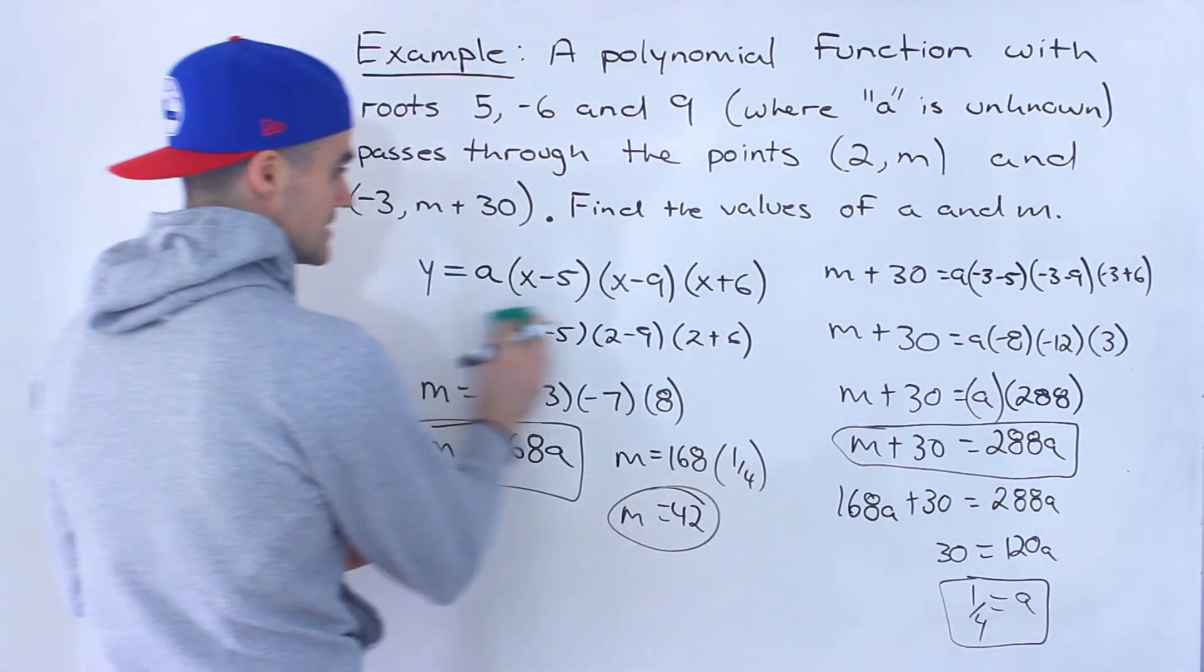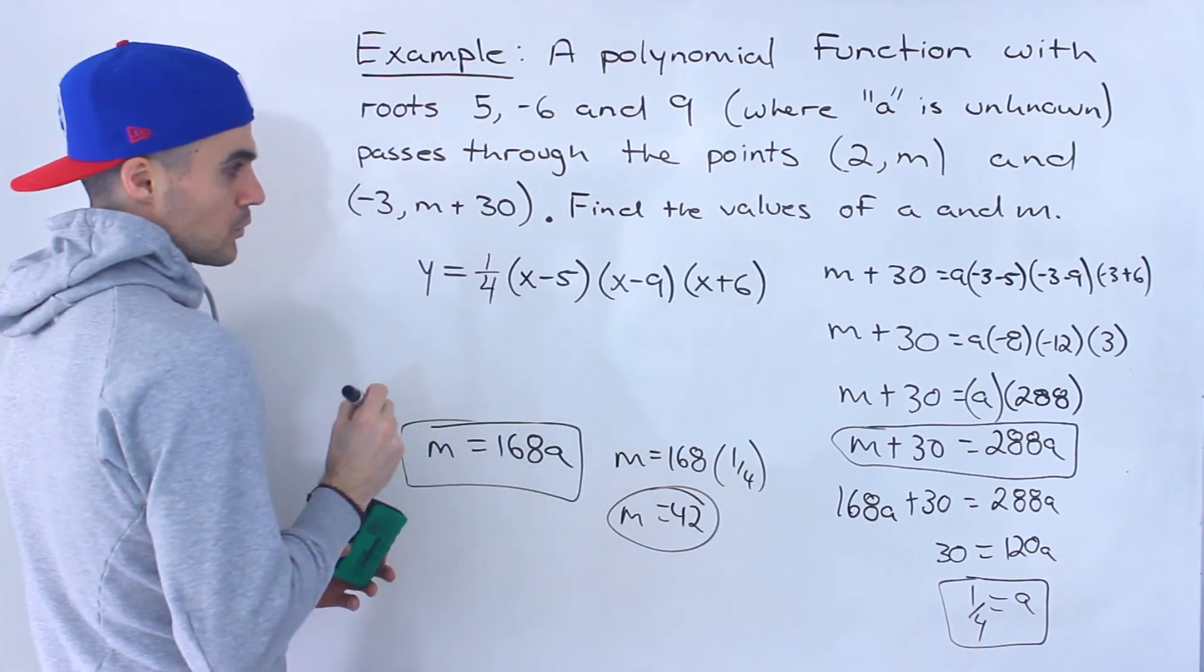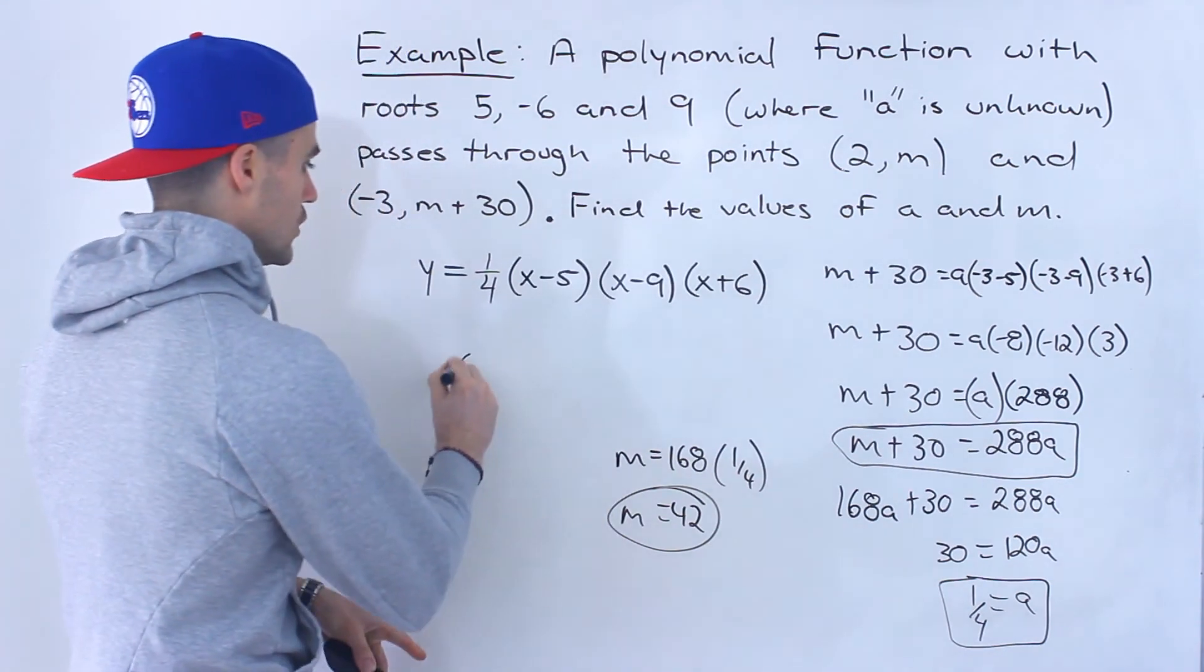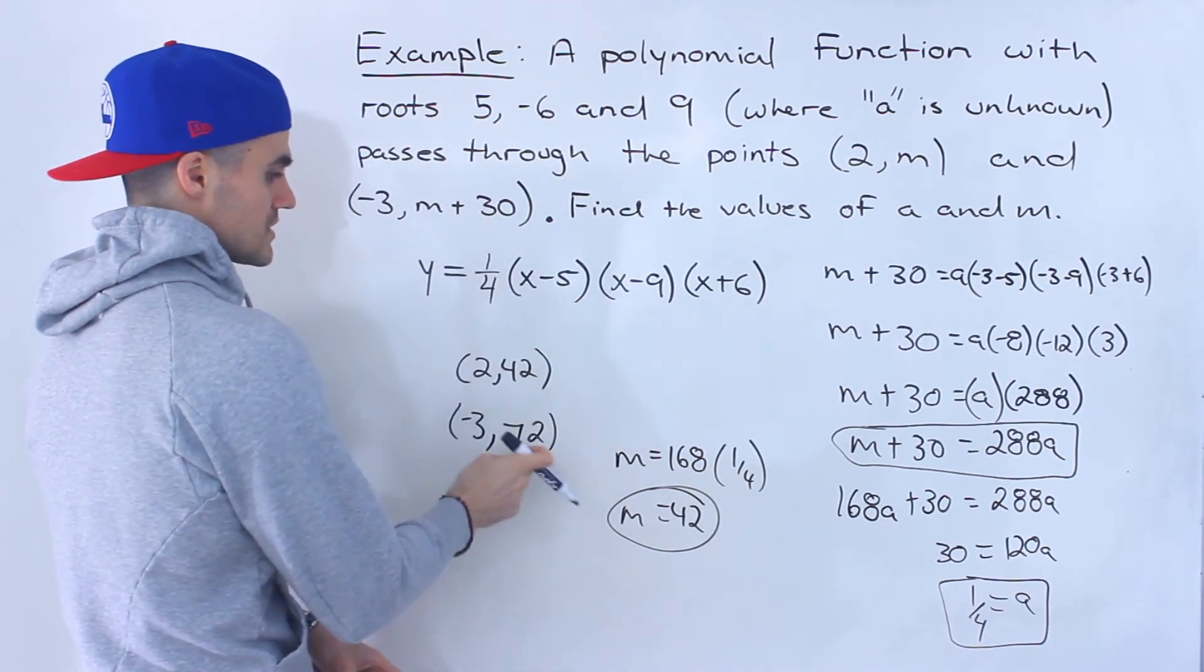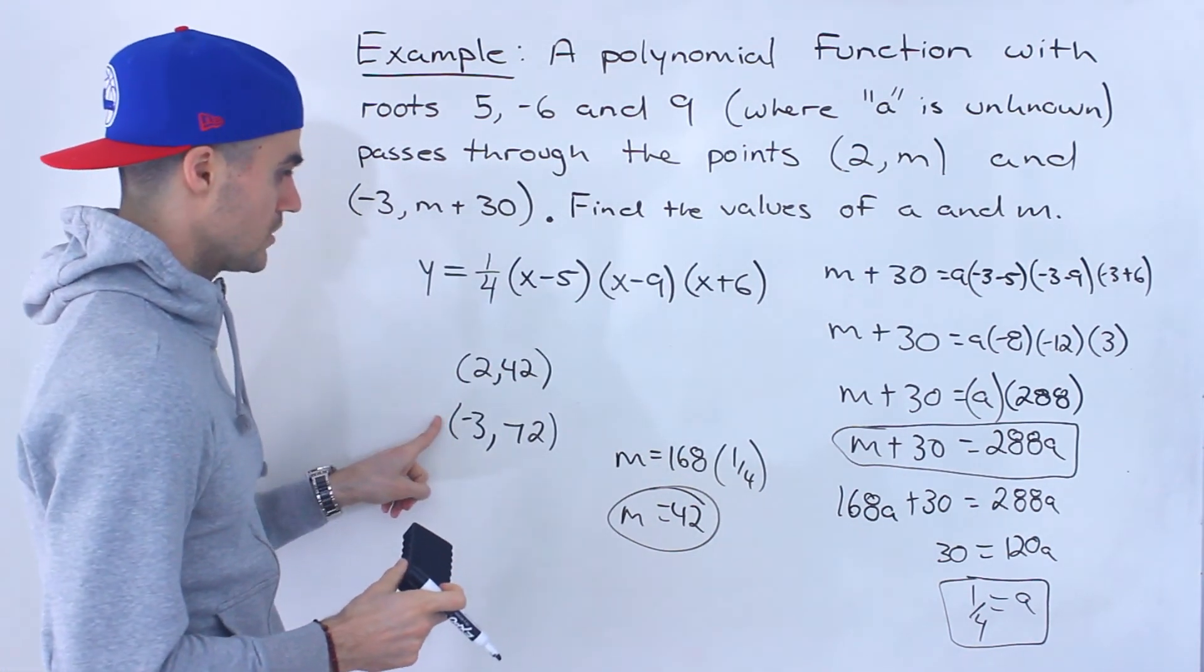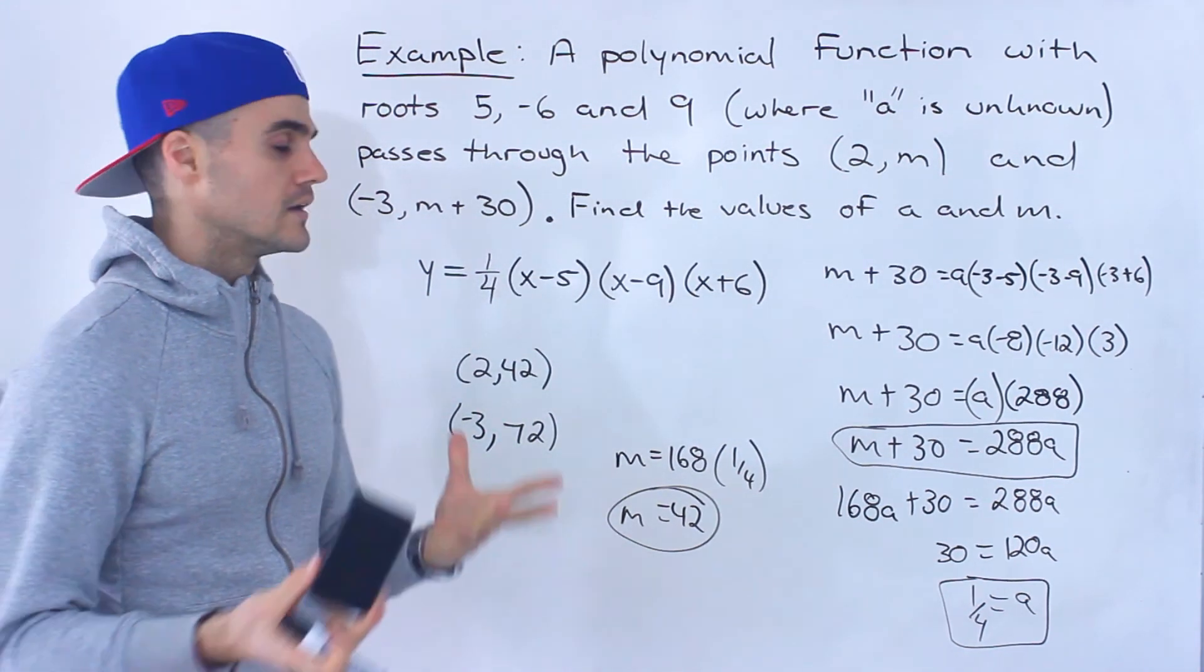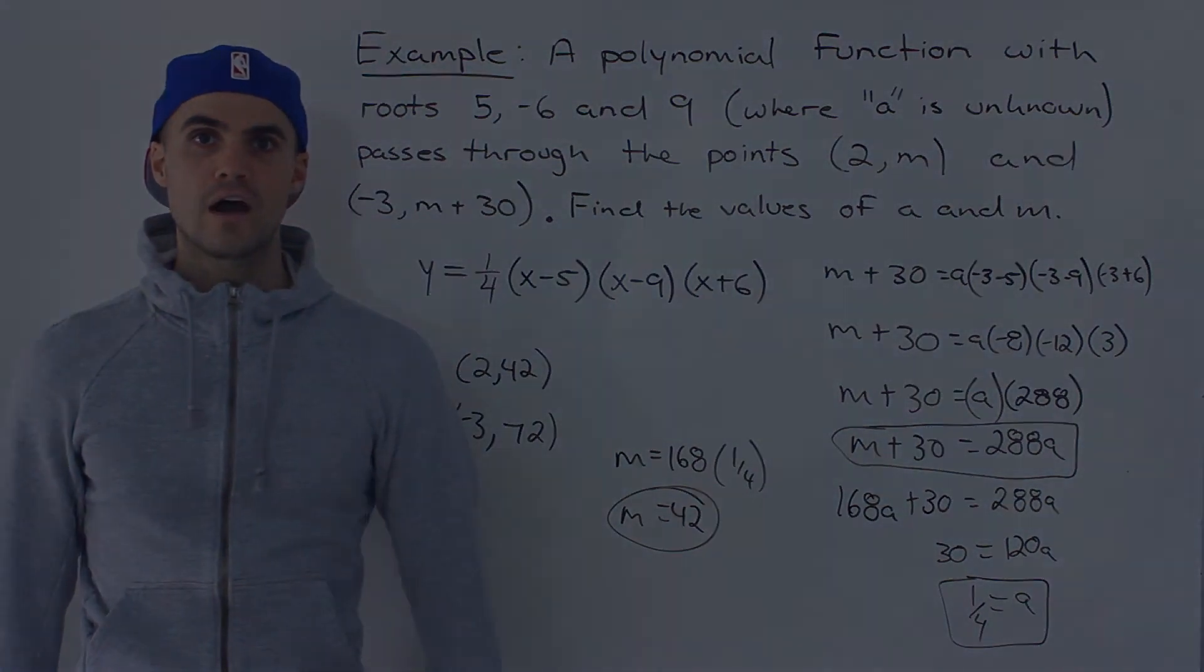And you can actually test this. So what we can do is we could plug in the A value here in the polynomial. So this is the actual polynomial that we're working with. The A value is 1 over 4 and these are the x-intercepts. And then what we could do is we could test after we plug in this M value of 42 we'll have (2, 42) and then we'll have (negative 3, 72). 42 plus 30 is 72. So what we can do is test whether this polynomial actually goes through these two points. The way we could do that we could plug in 2 for all the x values. Make sure you get a y value of 42. We could plug in negative 3 for all the x values. Make sure you get a corresponding y value of 72. And if you do that, that check would pan out. And so you could be pretty confident that those are the two values and the final answer.